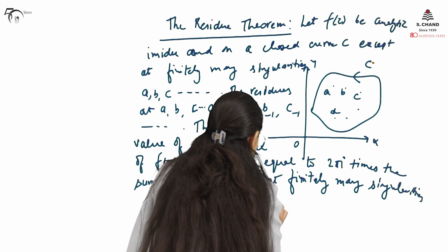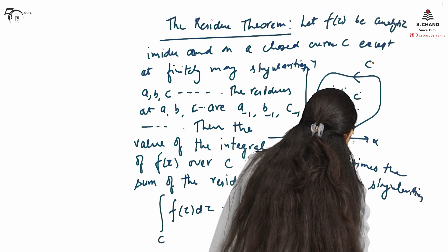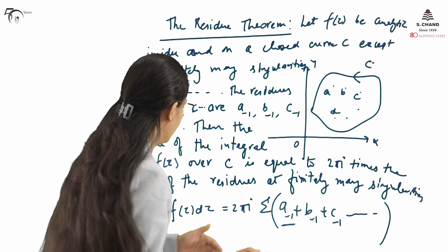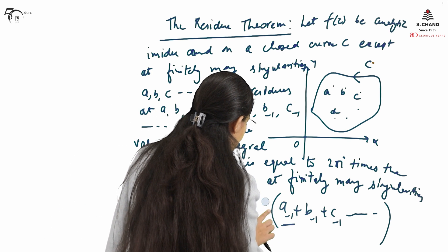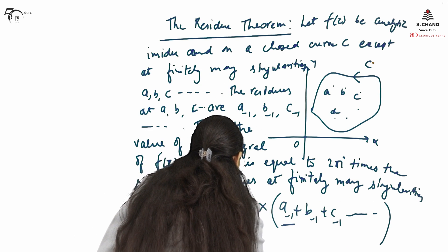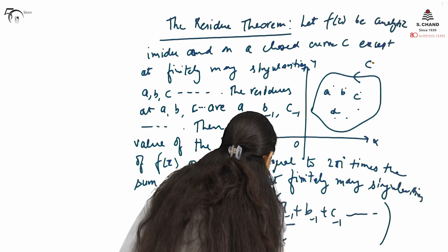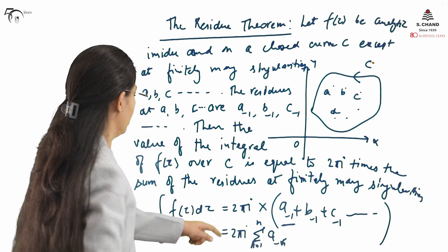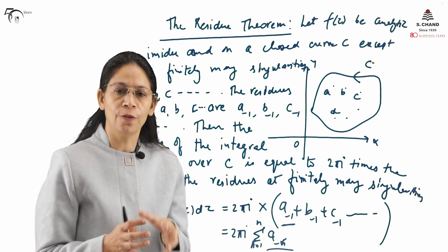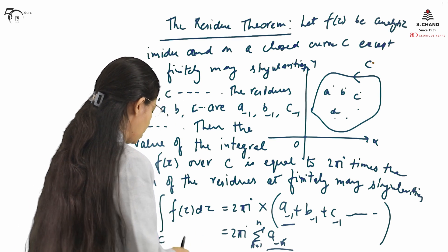That sum is A₋₁ + B₋₁ + C₋₁ and so on. The subscript notation for the residue has been discussed in our previous videos, so you can refer to them. This can be represented as the sum of the residues at finitely many singularities, written as Σ aₖ where k goes from 1 to n. This residue theorem enables us to find the value of the integral when there are finitely many singularities inside C.